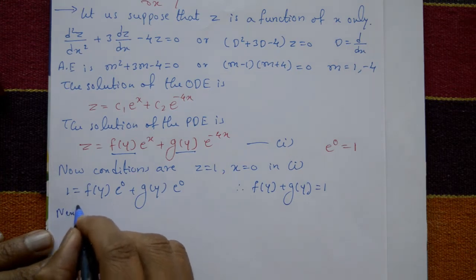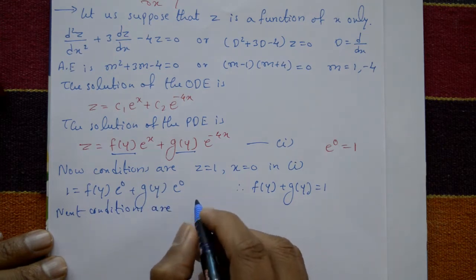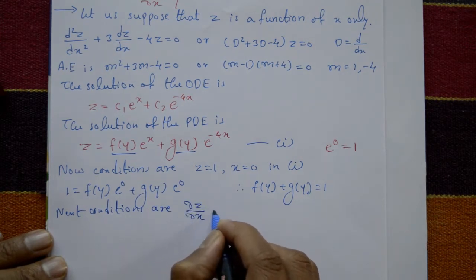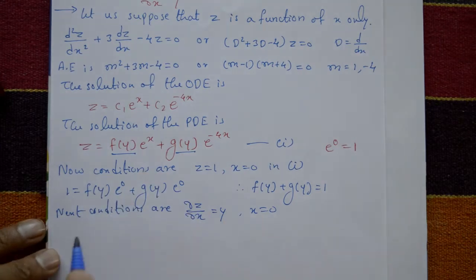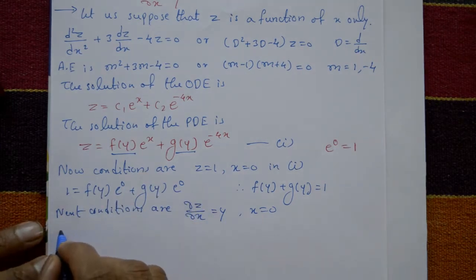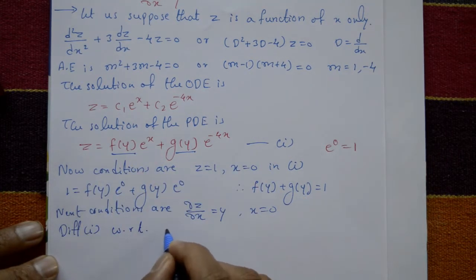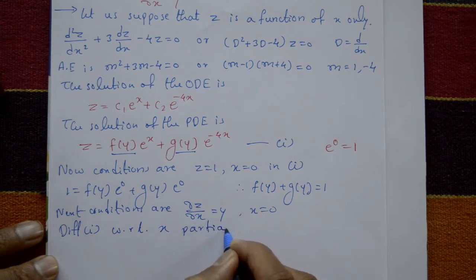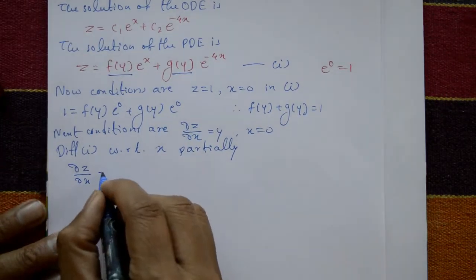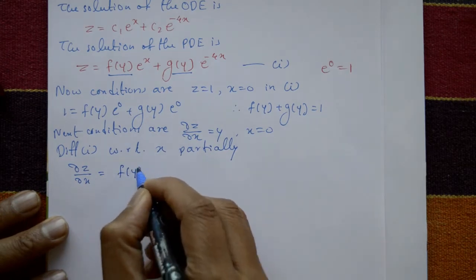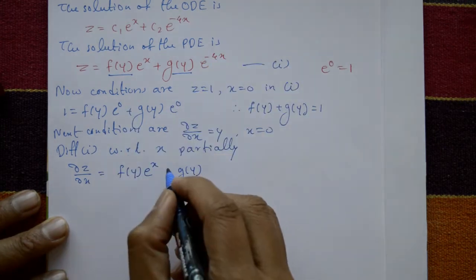Next condition: ∂z/∂x = y at x = 0. Differentiate equation 1 partially with respect to x, treating y as constant: ∂z/∂x = f(y)·eˣ + g(y)·(−4)e^(−4x).